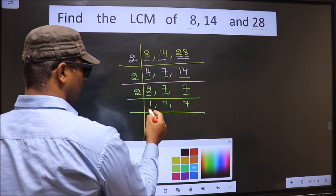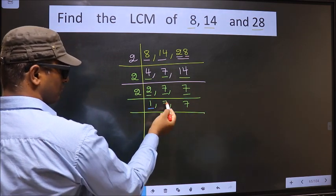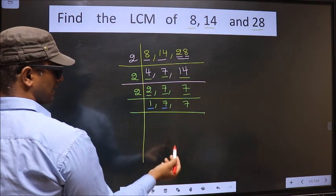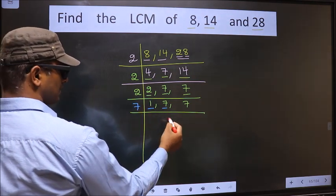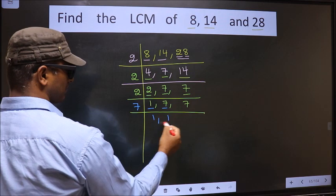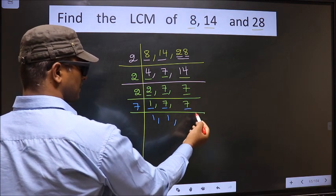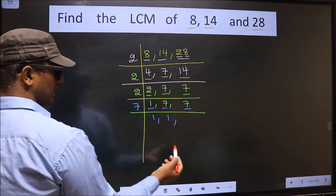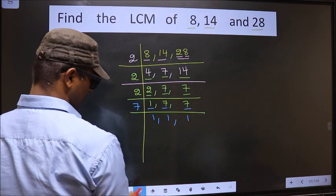We got 1 here, so focus on the other number, that is 7. 7 is a prime number, so 7 ones are 7. The other number 7 — when do we get 7 in the 7 table? 7 ones are 7.